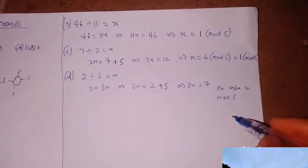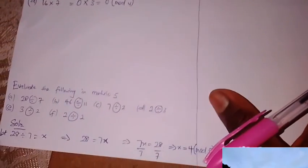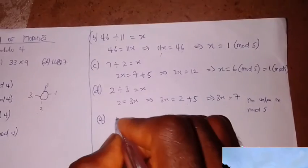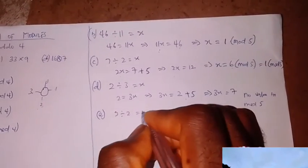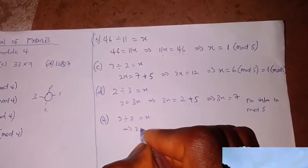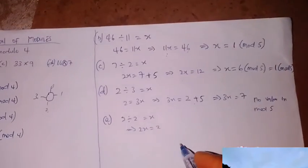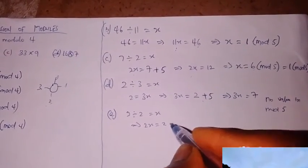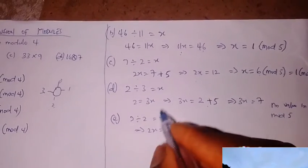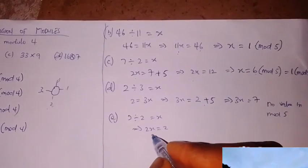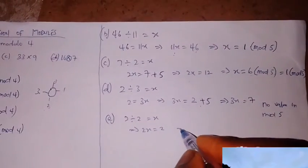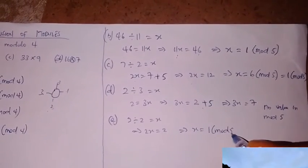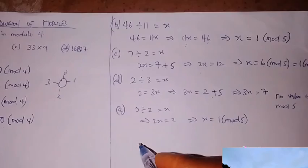For question E, we have 2 divided by 2 equals x. This implies 2x equals 2. I can divide both sides by 2, giving x equals 1. So x equals 1 in modulo 5.